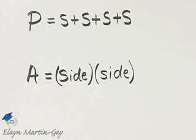Let's find the perimeter and the area of the square. Remember, perimeter means the distance around.